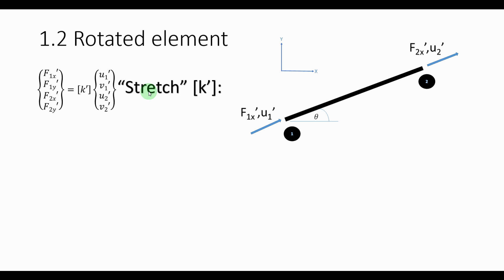Next we want to stretch K accent because we want to account for the horizontal and vertical displacements. As I've stated the vertical displacements will be zero.